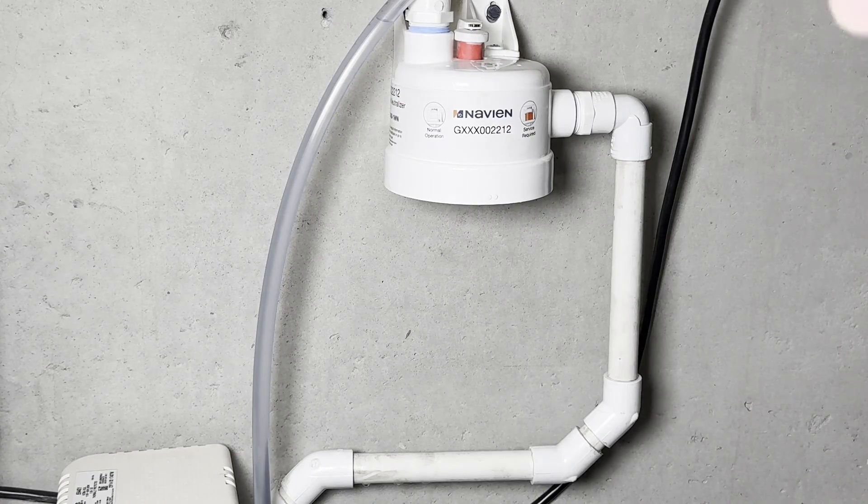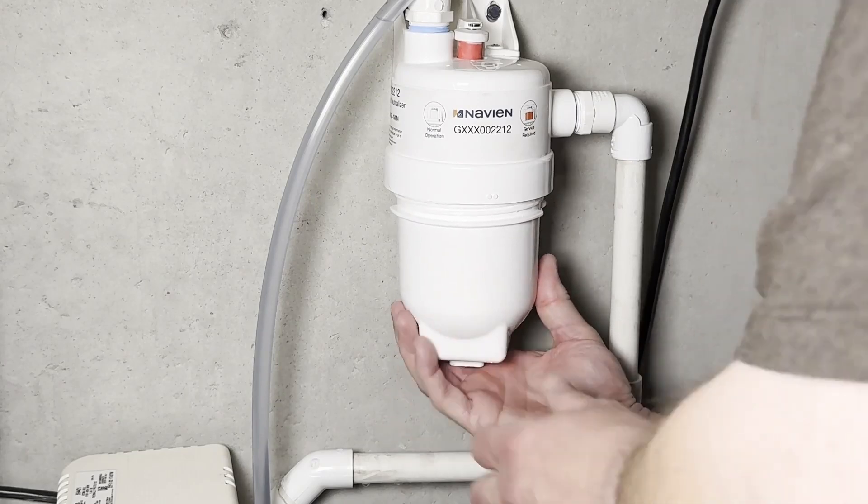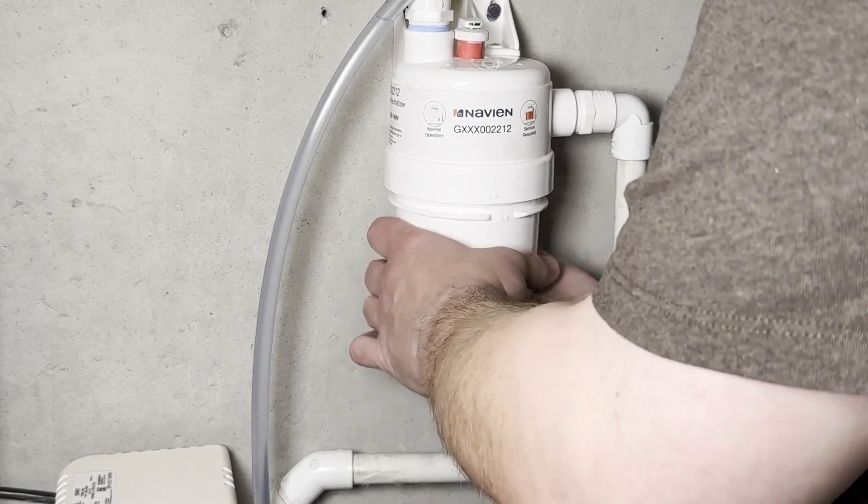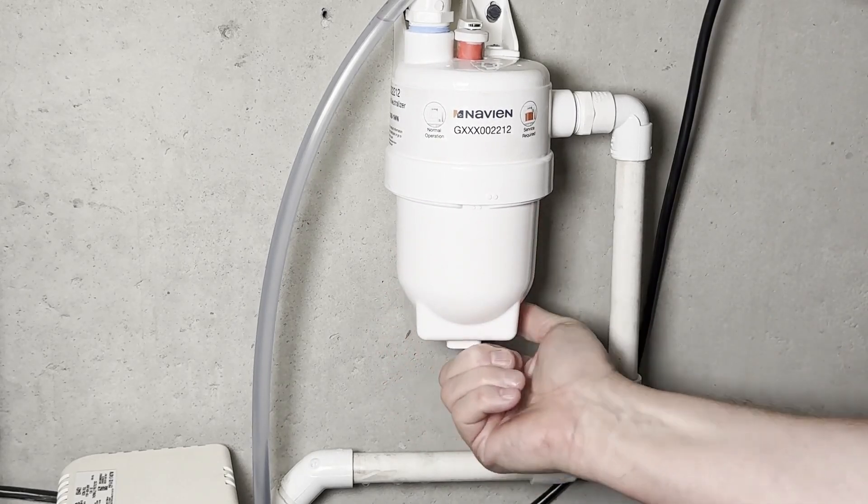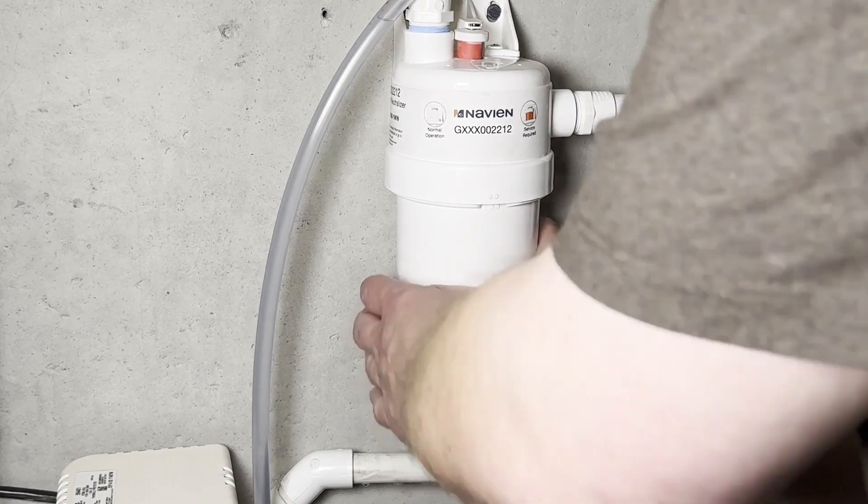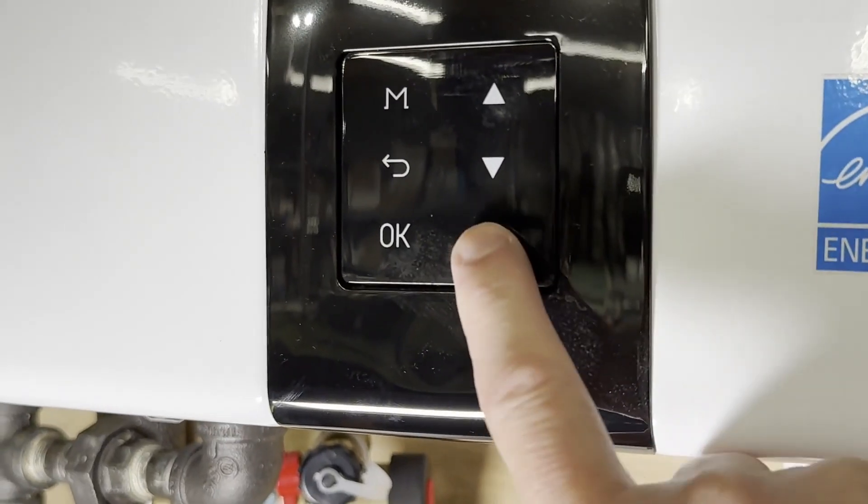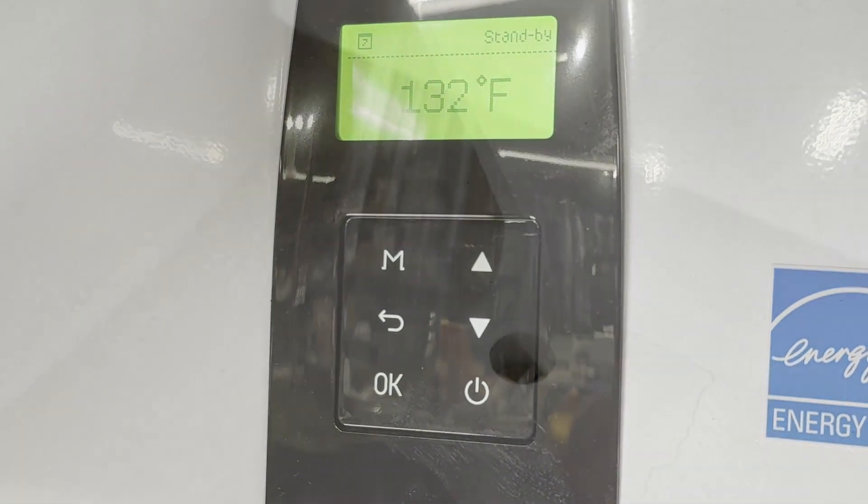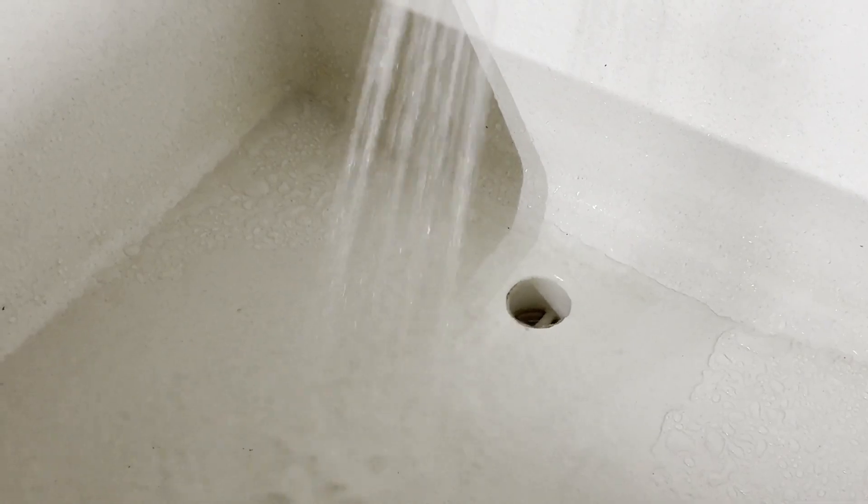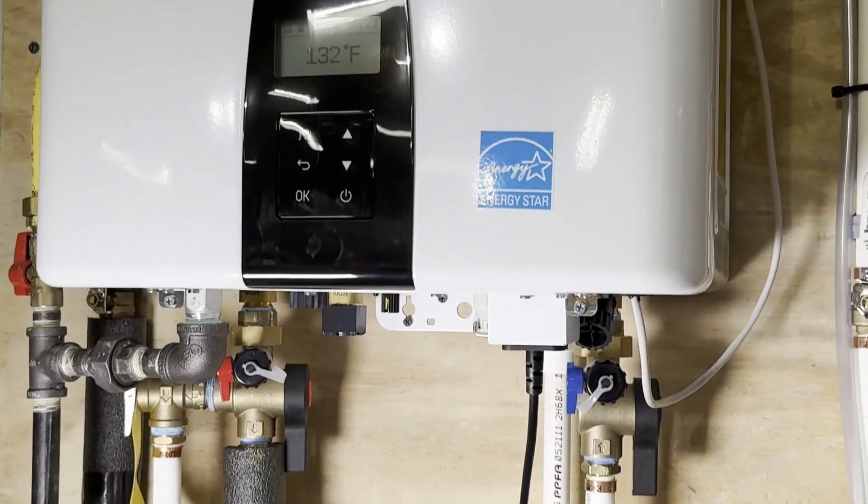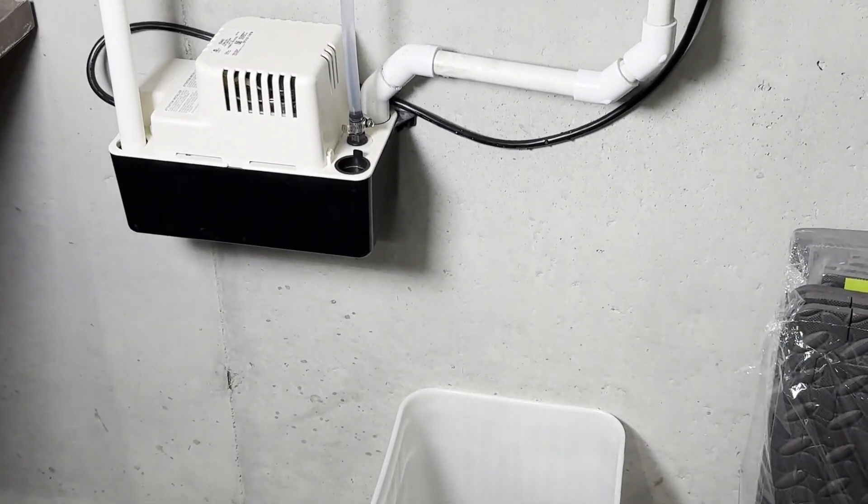So now that we're back, we're just going to take this, put it up in here, grab the threads, and screw it back on. And then power the unit back on. I'll go over to the utility sink and draw some hot water so the unit kicks on. So there we go. I'm going to leave the bucket under here for a couple days to make sure nothing leaks, but I think we'll be good.